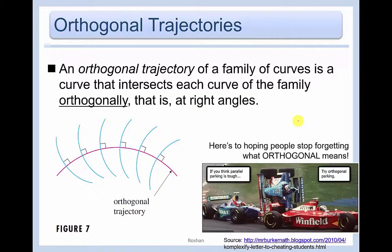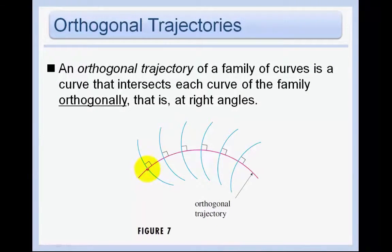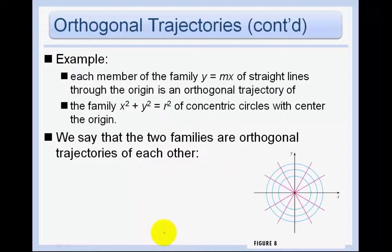Remember orthogonal trajectories? An orthogonal trajectory of a family of curves is a curve that intersects each curve of the family orthogonally, or at right angles — meaning the tangent lines are perpendicular there. For example, each member of the family y equals mx of straight lines through the origin is an orthogonal trajectory of the family x squared plus y squared equals r squared of concentric circles with center the origin. The two families are orthogonal trajectories of each other because at each intersection point the tangent lines are perpendicular.